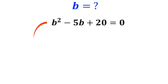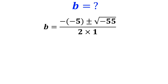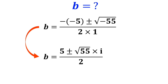So in this expression, b is equal to the negative of negative 5, plus or minus the square root of negative 55, divided by 2 times 1. This can be written as b equals 5 plus or minus the square root of 55 times i, over 2.